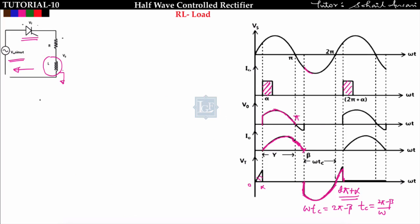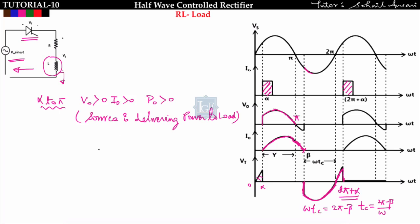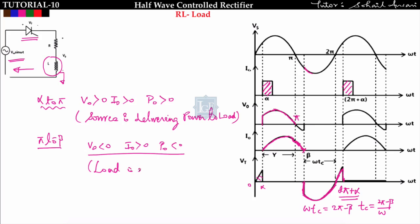From alpha to pi, V0 is greater than zero and I0 is greater than zero, so output power is positive — the source is delivering power to the load and the inductor is charging. From pi to beta, V0 is less than zero but I0 is greater than zero, so output power is negative — the load is delivering power back to the source. This concept is detailed in lecture 9B.